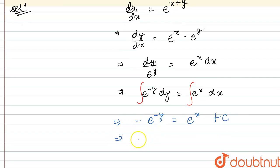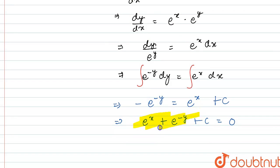Finally, what we are getting is e raised to the power x plus e raised to the power minus y plus arbitrary constant c equals zero. This is the required general solution of the given differential equation.